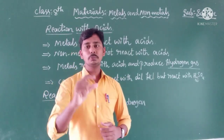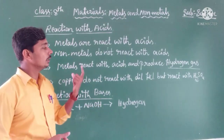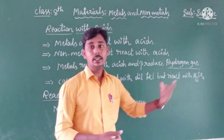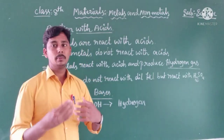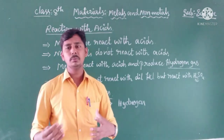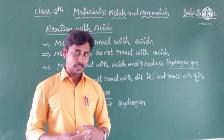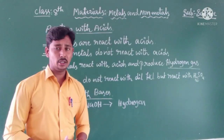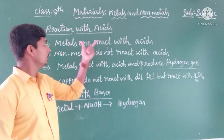The next chemical property is the reaction with acids. Metals react with acids and produce hydrogen gas. Non-metals do not react with acids. When metals react with acids, hydrogen gas is liberated. To observe this, we can hold a matchstick near the test tube where the metal is reacting with acid.